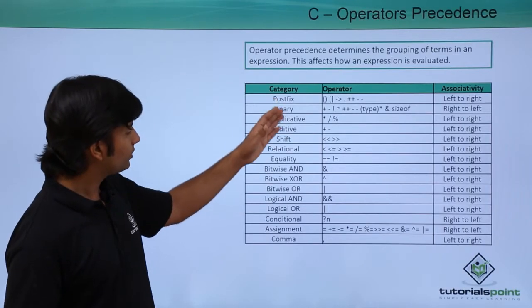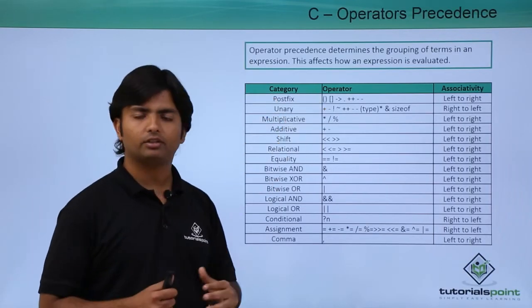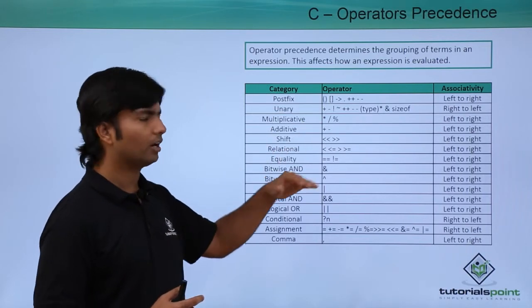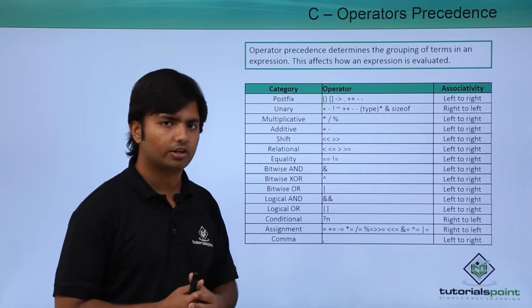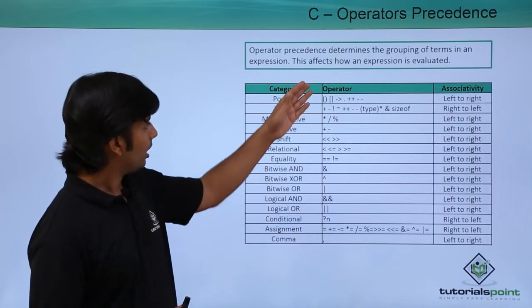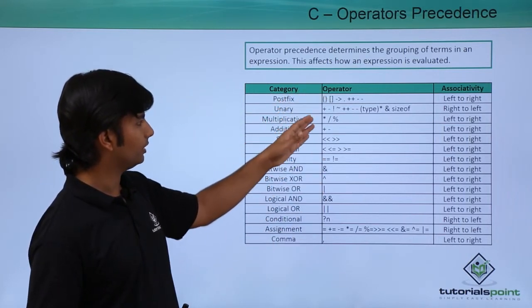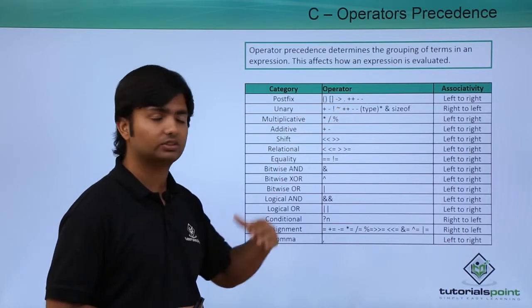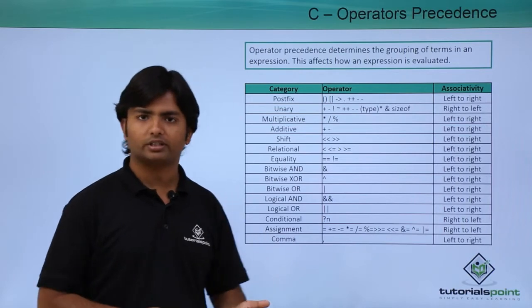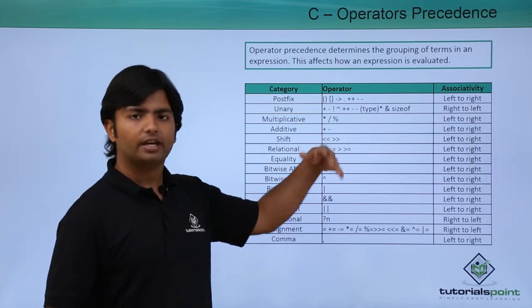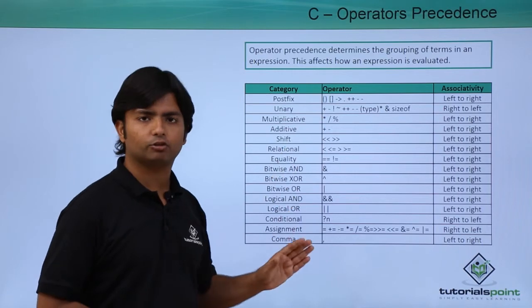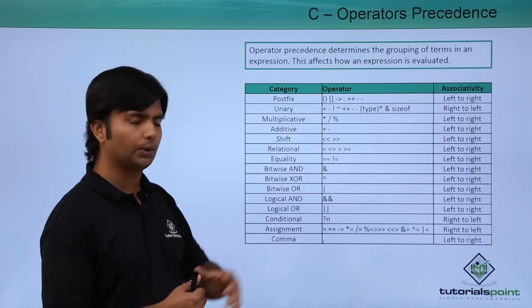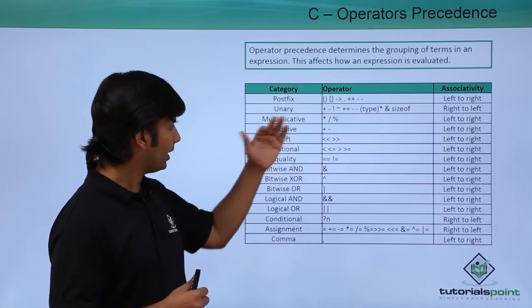We start with brackets — whenever you put any statement inside a bracket, that will have the maximum priority, the highest precedence. After that, unary operators such as the NOT, complement, increment (++), decrement (--), and sizeof operator come next. Then the multiplicative operators — multiplication, division, and modulus — are executed.